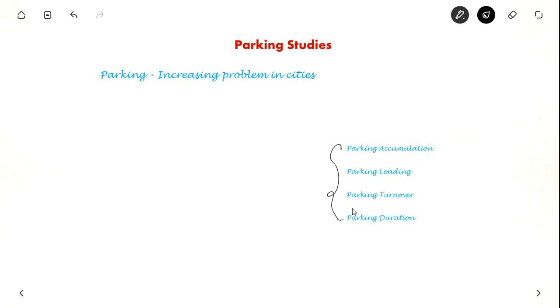For parking studies, these four are important parameters. Suppose you take a parking area and there are ten parking slots. At nine a.m. say you observe eight vehicles are parked. And at ten you observe that nine vehicles are parked. And at eleven you observe that five vehicles are parked. So this is called parking accumulation. So this is the parking accumulation curve. It is the number of vehicles parked at any instant.